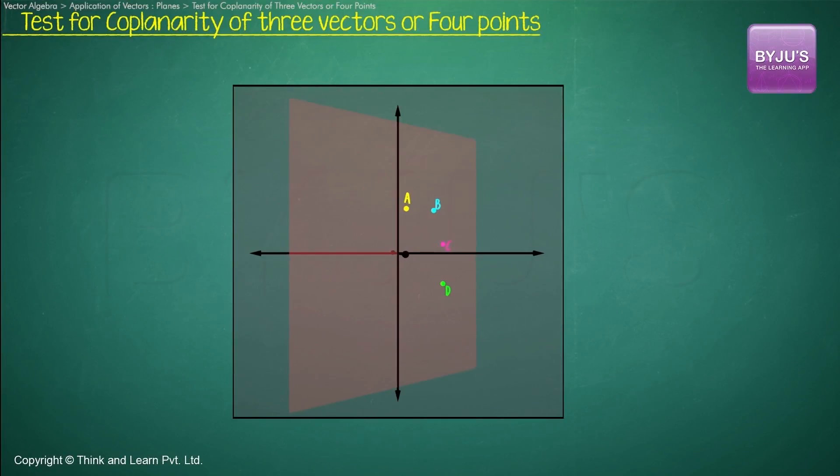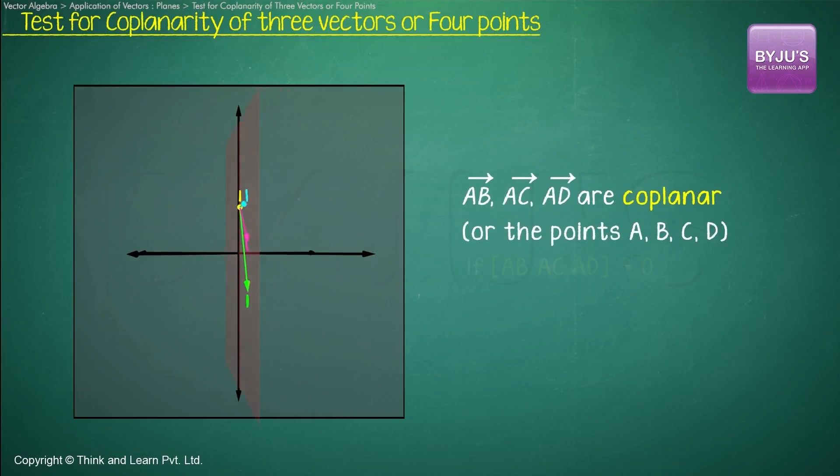Suppose the position vectors of four points A, B, C and D are given and we need to know if these four points are coplanar. First thing is to form the vectors AB, AC and AD and then apply the condition of box product, that is the box product of three vectors would be equal to zero.